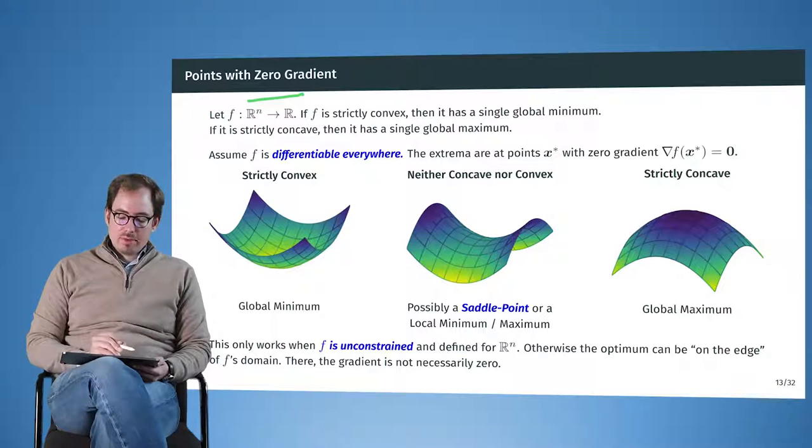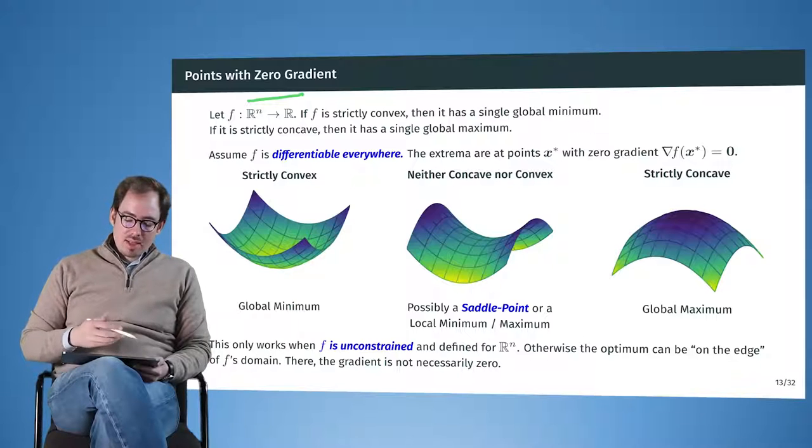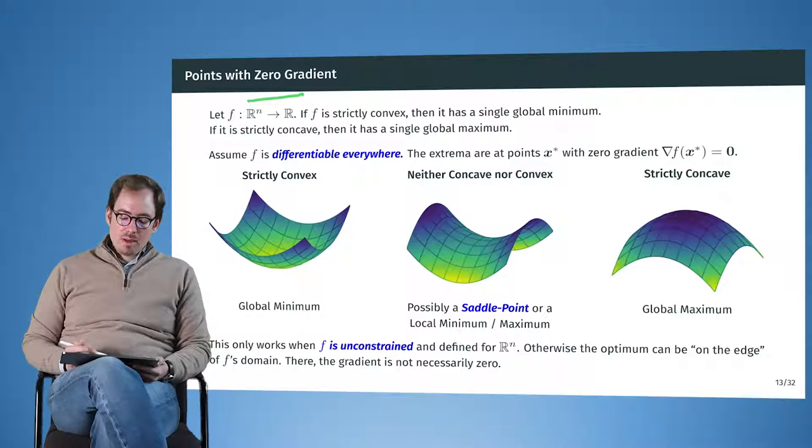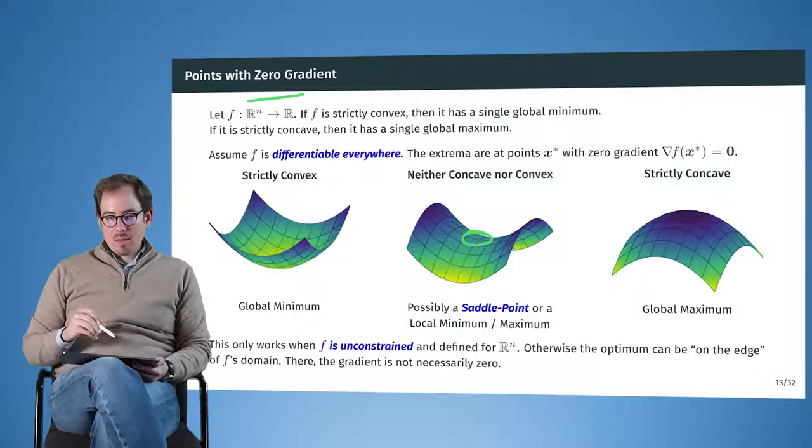And if the function is strictly concave, then we know there's a single global maximum. If it's neither of them, then there can be also locations where the gradient is exactly zero, which would be here, this saddle point in the middle, but which is not a minimum or a maximum.